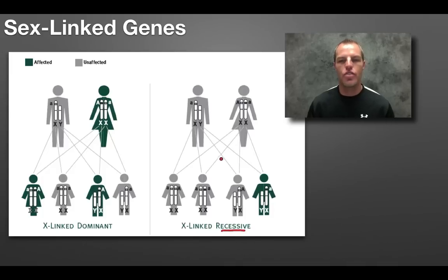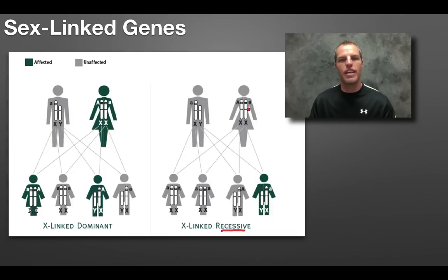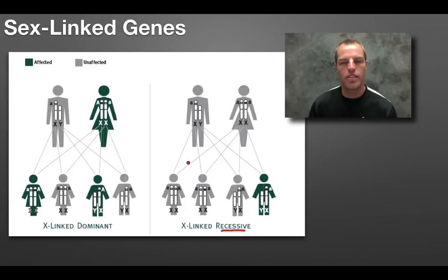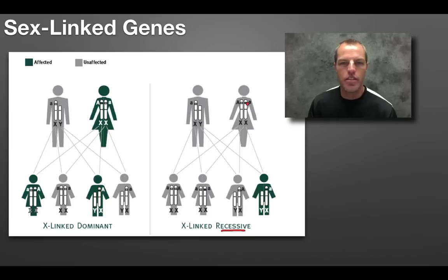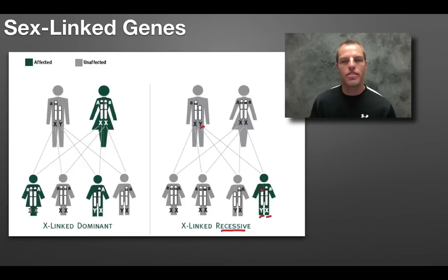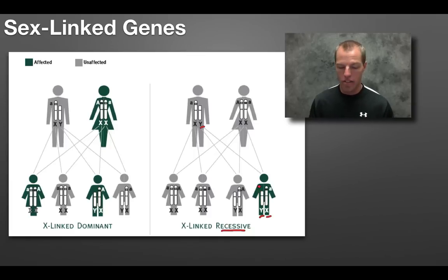But look at what happens when the trait is controlled by a recessive allele on the X chromosome — we're going to see it show up in males more often. For a recessive trait, you normally need two recessives for it to appear. If you're female, that applies because you have two X's, so you'd need two recessive alleles to have the disease. Whereas for males, one recessive is enough because there's nothing on the Y to mask that recessive. So anytime it's an X-linked recessive disease, males are more likely to get it.